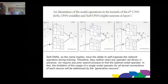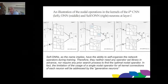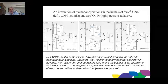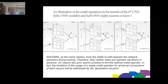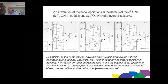In self-organized ONNs, the functions are optimized and created during backpropagation training. An operational neuron can have a single selected non-linear operator to mimic distinct synaptic connections of a biological neuron, but in generative neurons the non-linear operator is created and optimized during training to maximize learning performance.